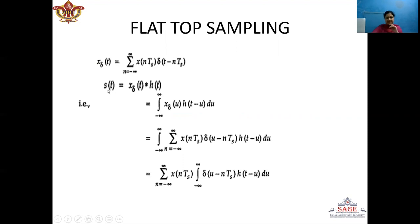The Flat Top sample signal S(T) is given by the convolution of X_delta(T) and H(T). According to the convolution formula, we write the integral from minus infinity to infinity of X_delta(U) · H(T − U) dU. Substituting the expression for X_delta(U), we write U in place of T and substitute into the convolution formula, giving the integration of the summation of X(N·T_S) · delta(U − N·T_S) · H(T − U) dU.